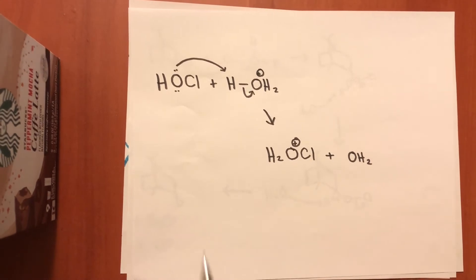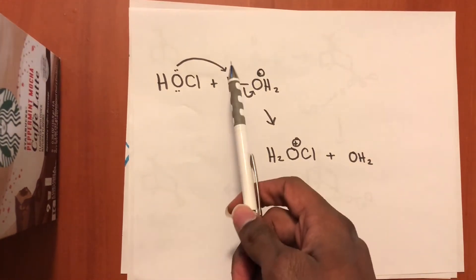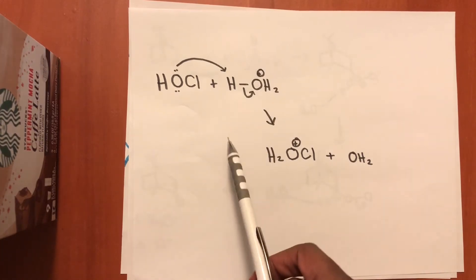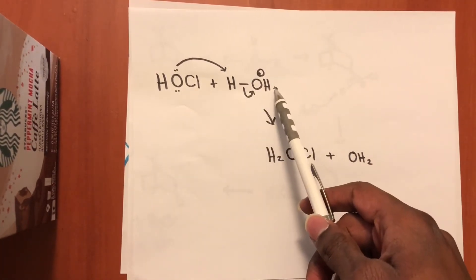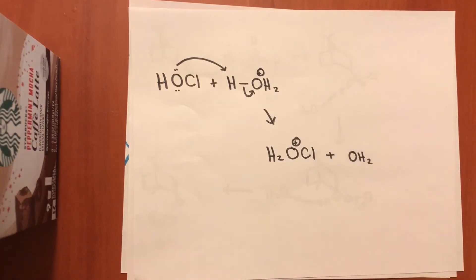Now we have the oxygen in the hypochlorous acid attacking the hydrogen in the hydronium and then the electrons retract back onto this oxygen. That forms protonated hypochlorous acid and water.